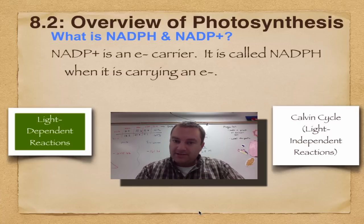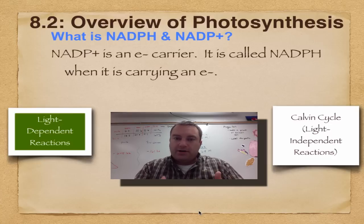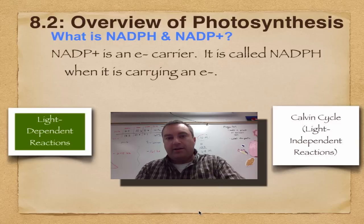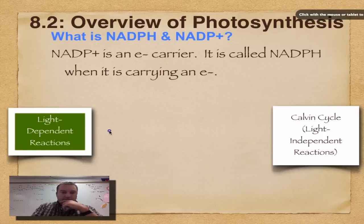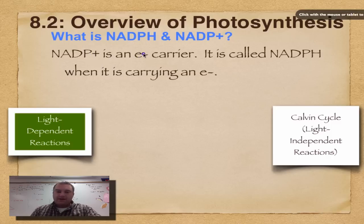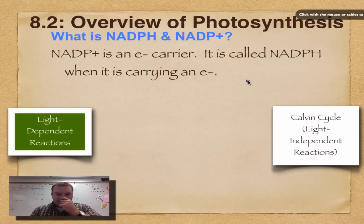NADP+ is an electron carrier. Think of it like a pickup truck — it's going to grab an electron, throw it in the bed, and carry it to where it needs to go. Notice this plus right here? That means it has a positive charge. Electrons have a negative charge, so anything that's negative will be attracted to that. Electrons are so small that you've got to carry them on something.